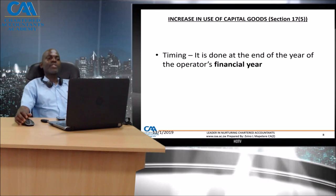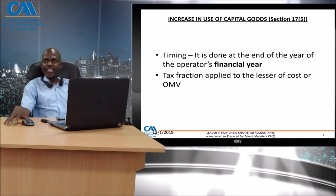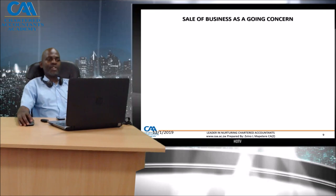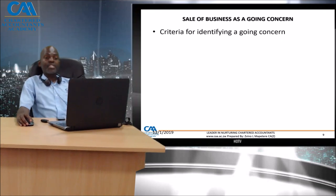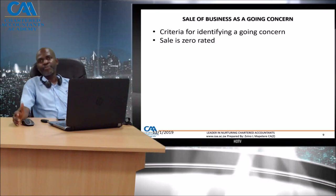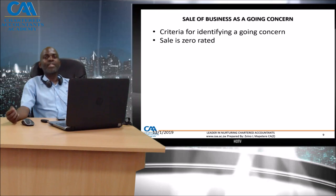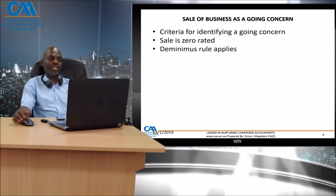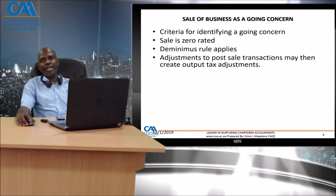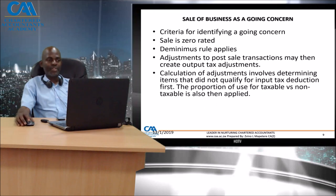Section 17.5 concerns an increase in the use of capital goods. The key issue is around timing: it is about the financial year, the time of supply - not the invoice date - and the tax fraction being applied. The sale of a business as a going concern is a key adjustment. The criteria for identifying a going concern are important: it should be expressed in the agreement that we are selling the business as a going concern, no material adjustments need to be done for the buyer to operate that business, and the de minimis rule applies at 90% plus. That sale will be zero-rated.